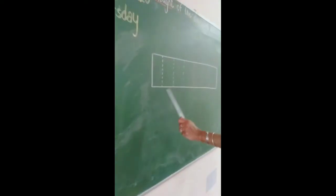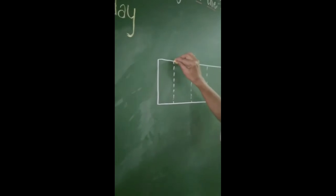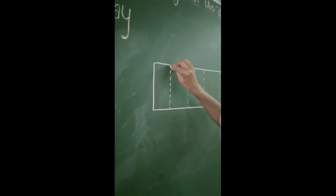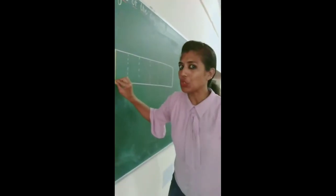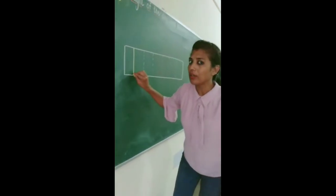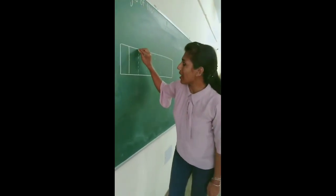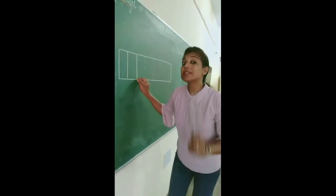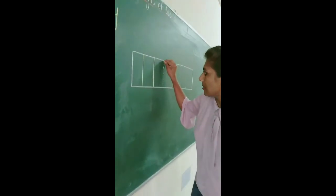Let's learn tracing with me on the board. Always start from the top and come down. Wow! If you join the dots together, the line will be straight. And these lines are called standing lines.